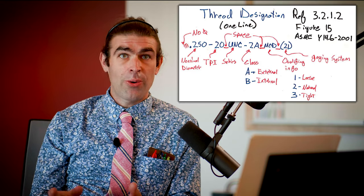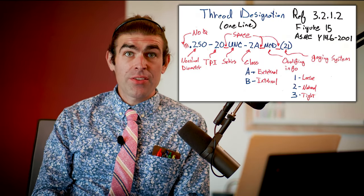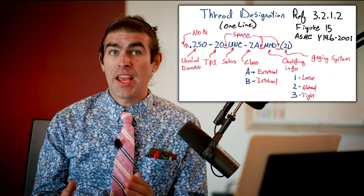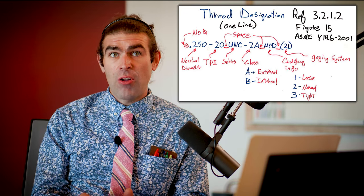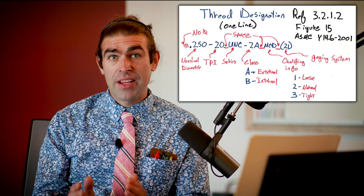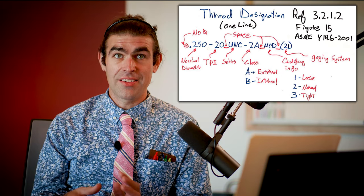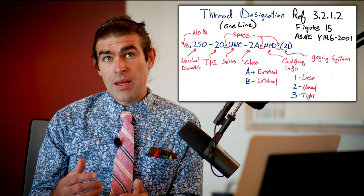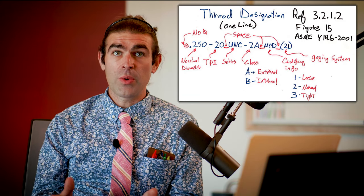Next is qualifying information — usually not there, but if you have something like a left-hand thread it will be. We assume all threads are right-handed unless we have LH in capital letters, which indicates a left-handed thread. These are kind of rare; they're used in some applications like wheel hubs when you want things to not untighten when they spin. Sometimes you'll see multiple starts on a thread — it'll say something like two start or three start.